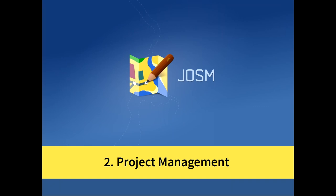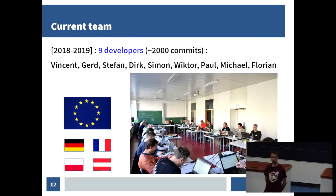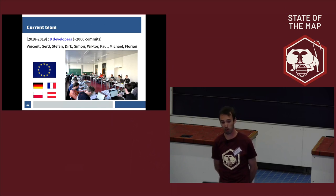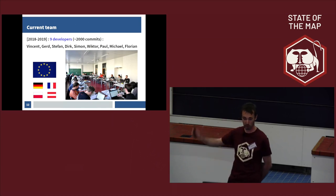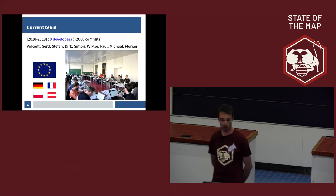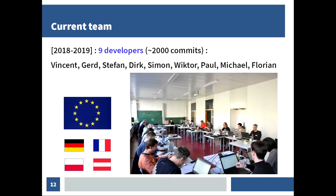Now, some words about project management. How do we work? Who are we? It is hard to define a real current team, because we are all volunteers — we work on our free time, so the team evolves depending on the time available for each. In the last two years, we were nine developers who committed directly on the SVN repository for about 2,000 commits. We are all from Europe — from Germany, France, Austria, and Poland. Here is a rare picture of OSM developers eating pizza and coding, at the invitation of Geofabrik last year in Karlsruhe.